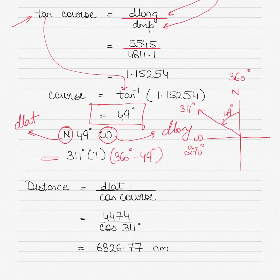Then the next formula is distance equals D'lat by cos course. You know the D'lat from above, so if you put the value here: 4474 divided by cos 311 degrees. Even if you had put 49 degrees you would get the same answer. Sometimes you get a negative value—you should ignore the negative value.